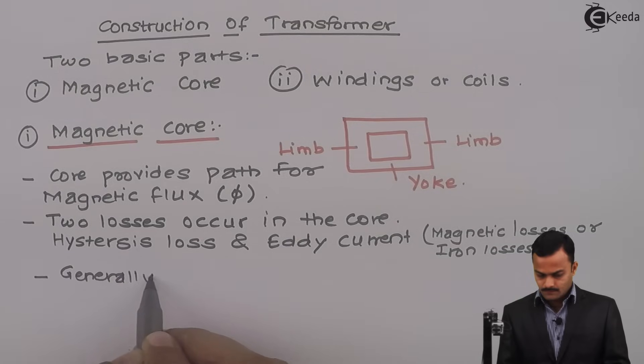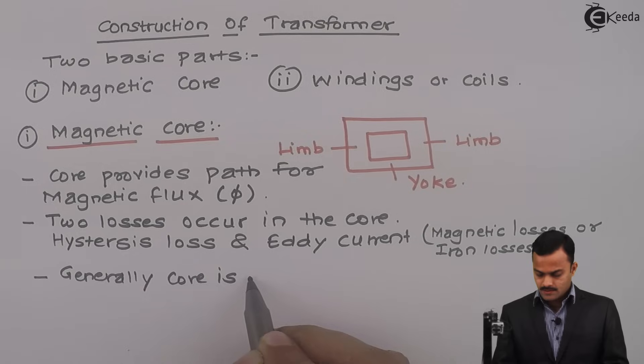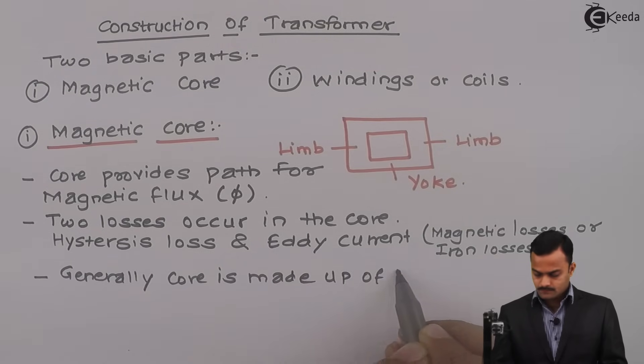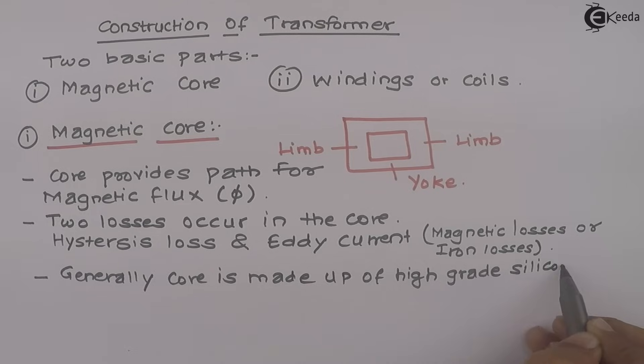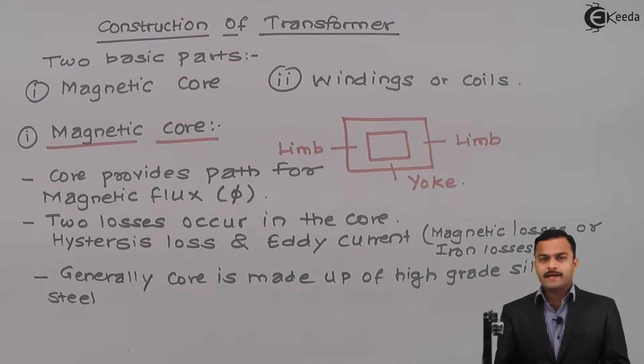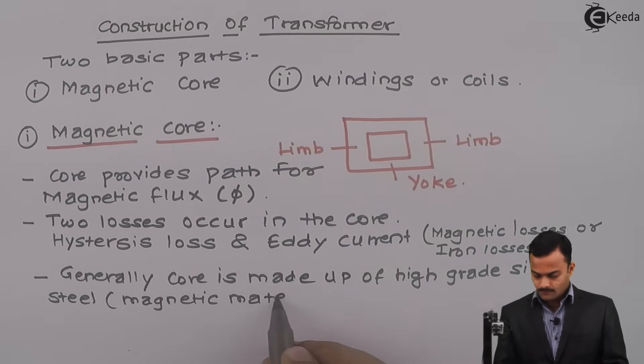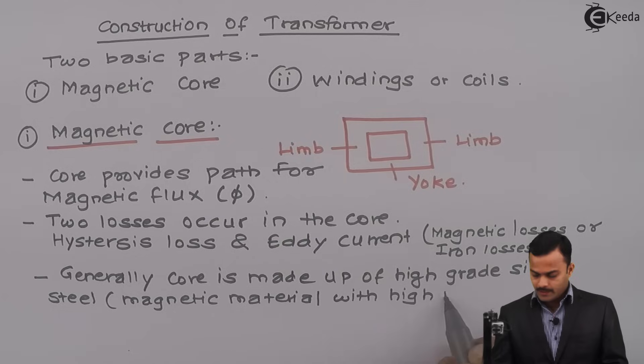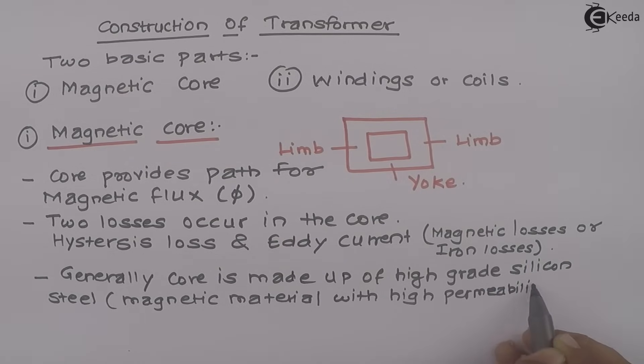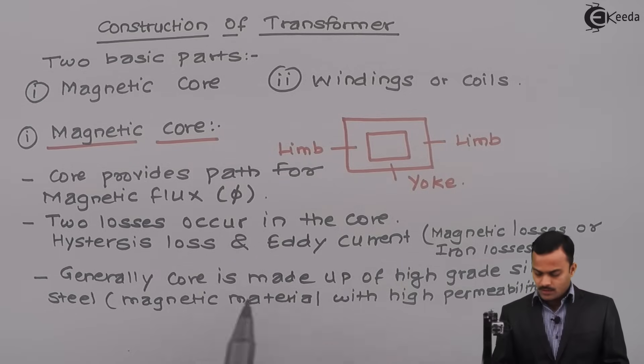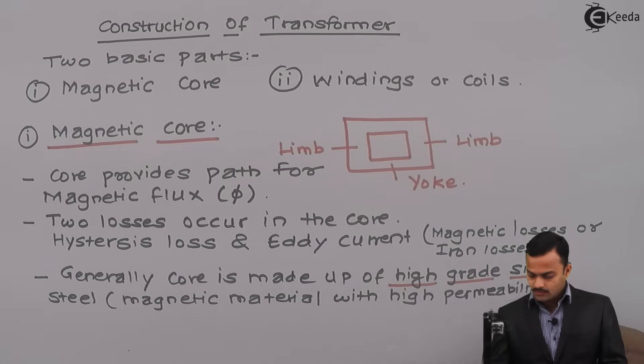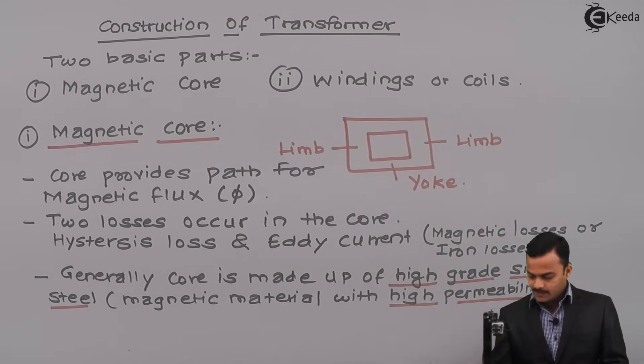Generally, core is made up of high-grade silicon steel. This is the best magnetic material with high permeability. This is what is provided by high-grade silicon steel. It's a high permeability material.